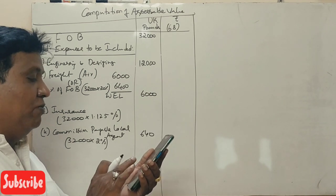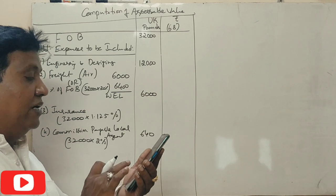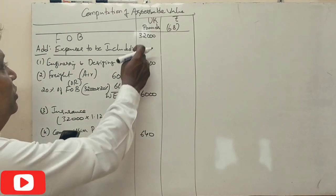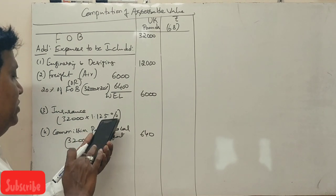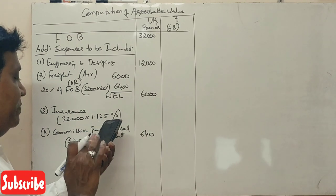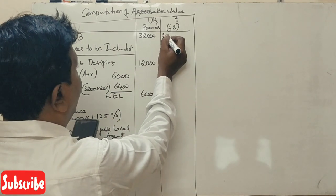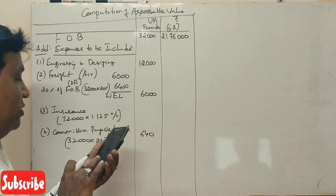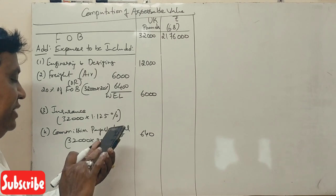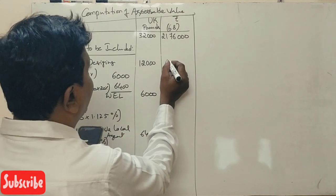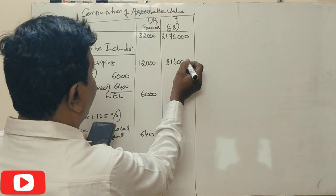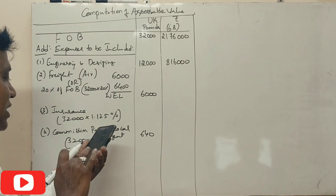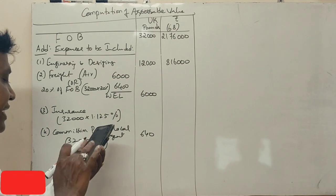640 pounds. Assessable value. These values: 32,000 pounds into 68 rupees. 21 lakh 76,000.